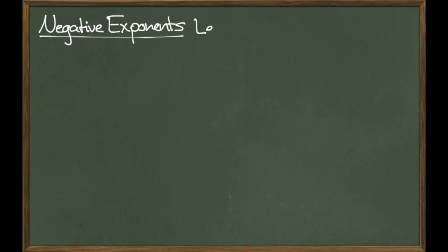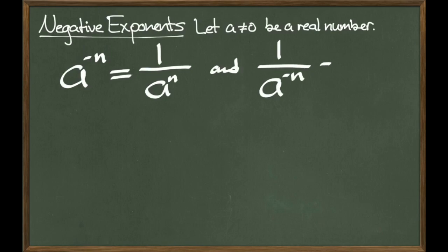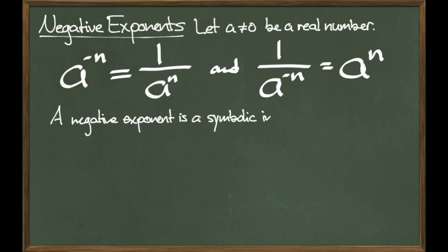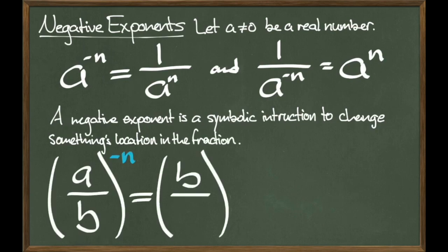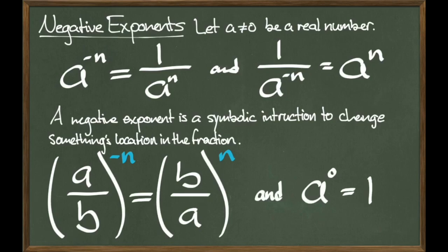Now we're ready to talk about what to do in the event of a negative exponent. Let a be a non-zero real number. Then define a to the negative n as 1 over a to the n, and 1 over a to the negative n as a to the n. The easiest way to think about a negative exponent is as a symbolic instruction to change something's position in the fraction. In the case that you are given an entire fraction raised to a negative exponent, simply drop the negative and flip the fraction, so a over b to the negative n becomes b over a to the n. It's also worth mentioning that a to the 0 is defined as 1 for any non-zero real number a. With all of this, we are able to handle any integer exponent of a real number.